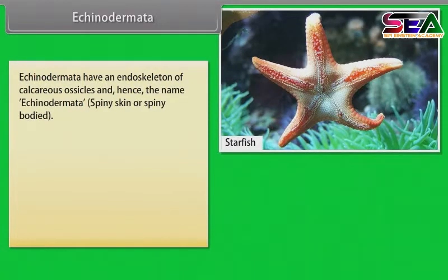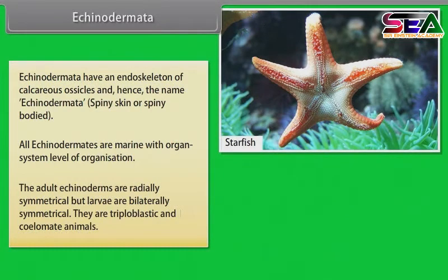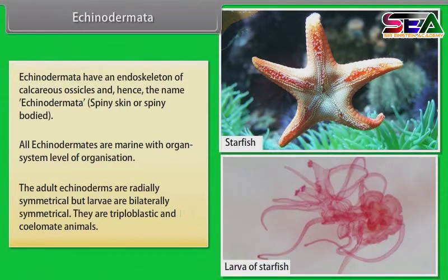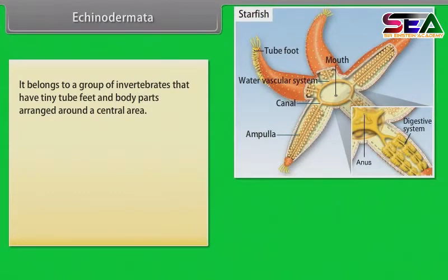Echinodermata have an endoskeleton of calcareous ossicles, hence the name Echinodermata, meaning spiny skin or spiny-bodied. All echinodermates are marine with organ system level of organization. Adult echinodermates are radially symmetrical, but larvae are bilaterally symmetrical. They are triploblastic and coelomate animals, belonging to invertebrates with tiny tube feet and body parts arranged around a central area.